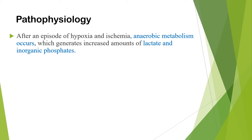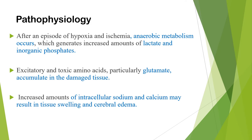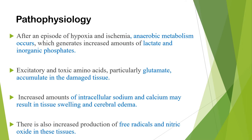When we see the pathophysiology of hypoxic ischemic encephalopathy: after an episode of hypoxia and ischemia, anaerobic metabolism occurs, which generates increased amounts of lactate and inorganic phosphates. In addition, excitatory and toxic amino acids, particularly glutamate, accumulate in the damaged tissue. Increased intracellular sodium and calcium may result in tissue swelling and cerebral edema. There is also increased production of free radicals and nitric oxide in the tissue, which causes tissue damage.